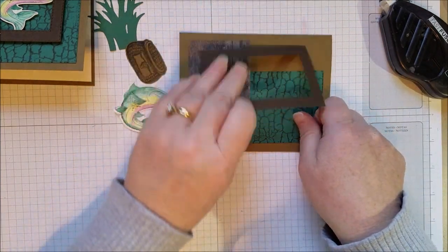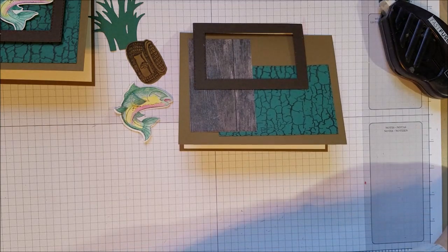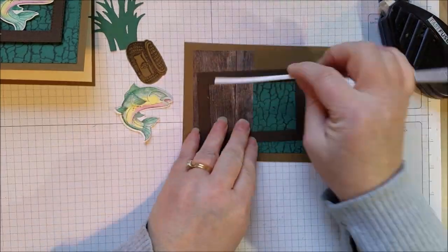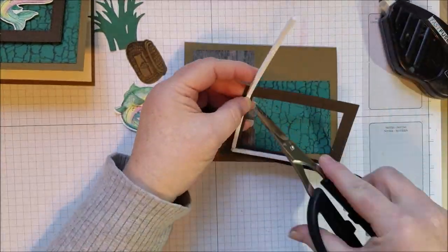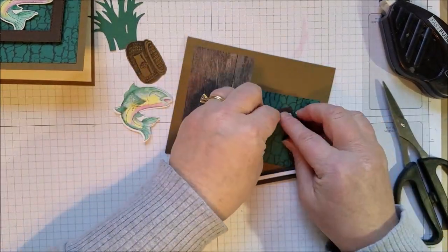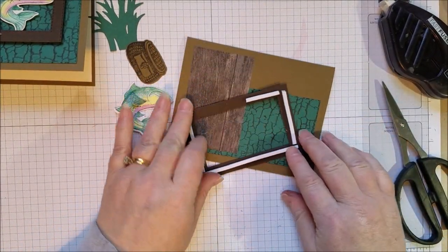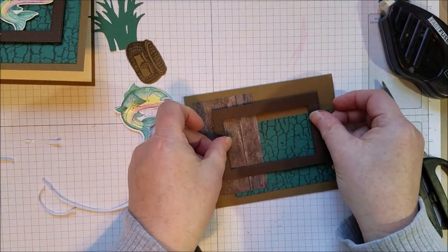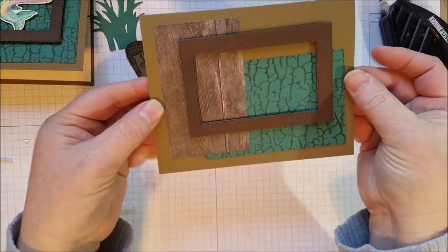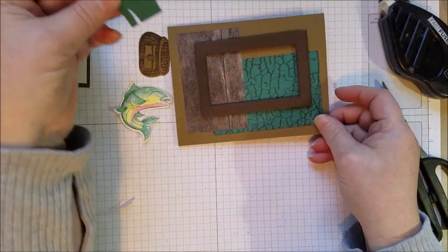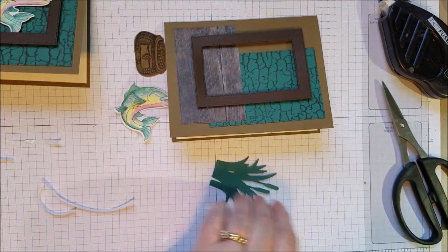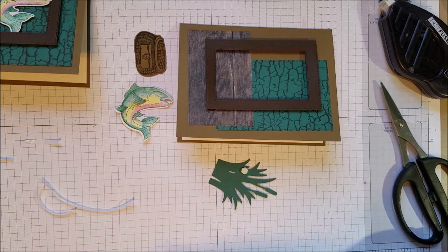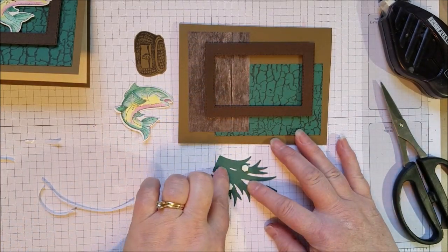Now this is also made with a stitched rectangle framelit. So I just added one size and then went in a size. And we're going to use the foam strips to put this down. These were a great addition to our adhesive collection. Now I didn't go down here because I'm going to tuck the weeds under there. So I've got all my stitched rectangles layered together.